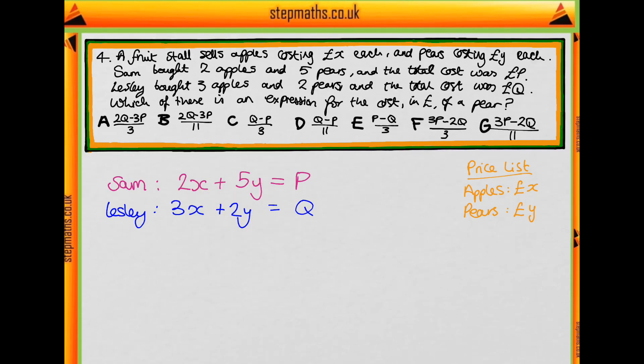So notice that we need to get a common amount of X for both Sam and Leslie. The lowest common number we could do is six. So we're going to multiply Sam's equation by three, Leslie's equation by two, so that in both cases we have six X. As you can see, we've multiplied Sam's equation by three, Leslie's by two, and we now have a nice set of equations which we can solve simultaneously.